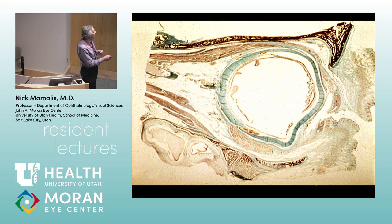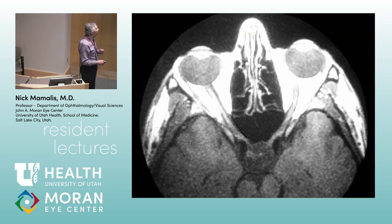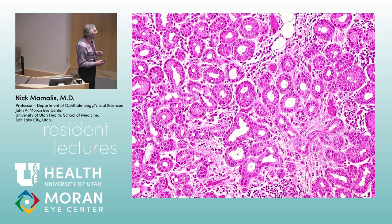In a sagittal view, you can see the bones, the globe, the intraconal space with the optic nerve running through it, the vessels, the extraconal space, and then of course the subperiosteal space right along here. This just shows it on a scan, illustrating the closeness of the nearby sinuses.